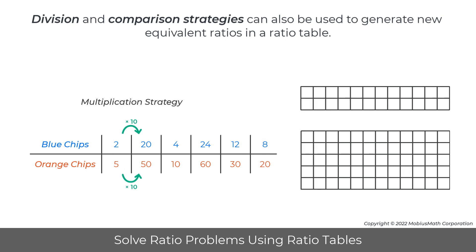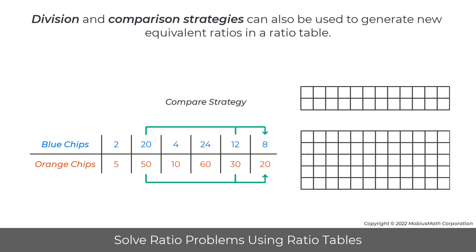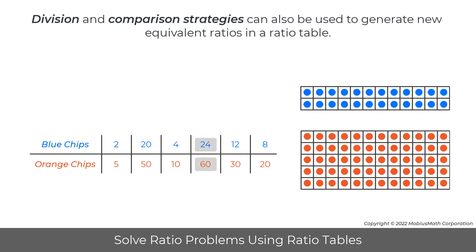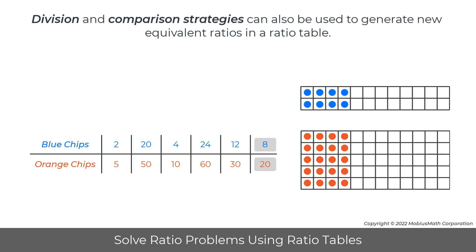Note, the multiplication, division, combine, and compare strategies for ratio tables generate these new equivalent ratios in the table, because each of these ratios maintains the original ratio of two blue chips for every five orange chips.